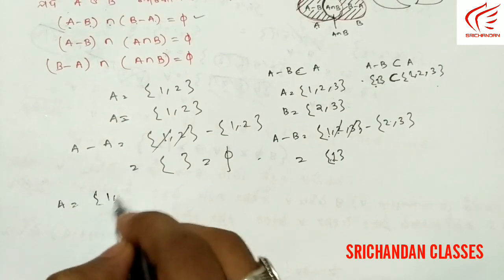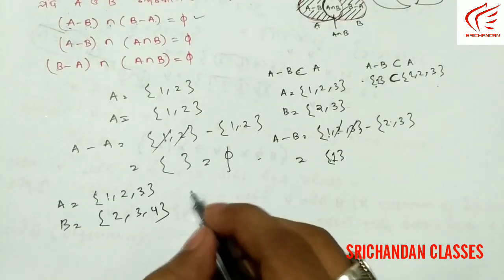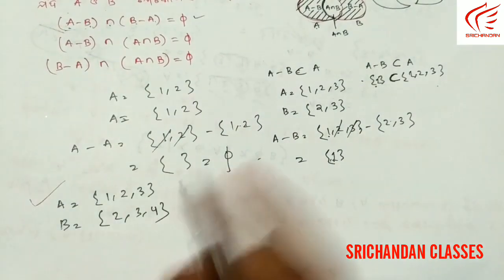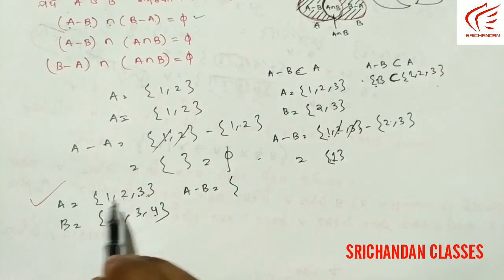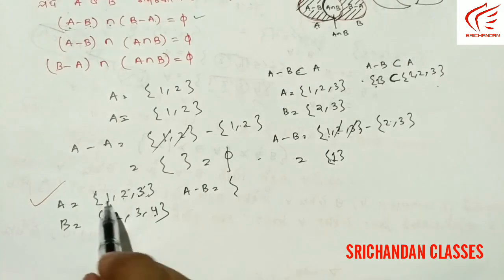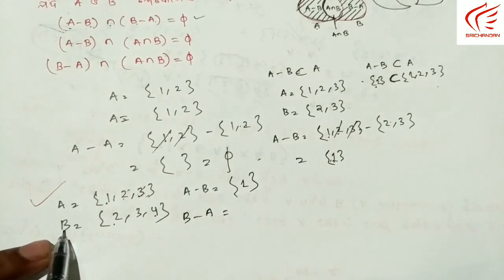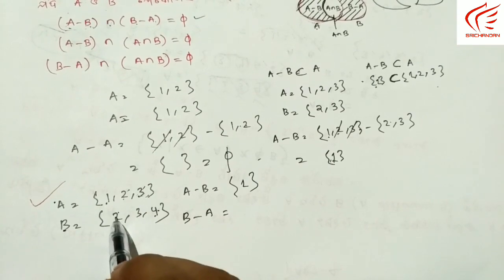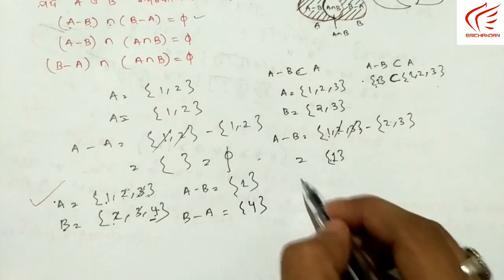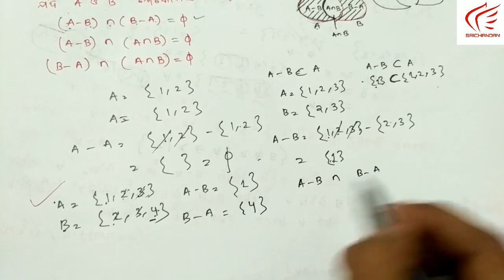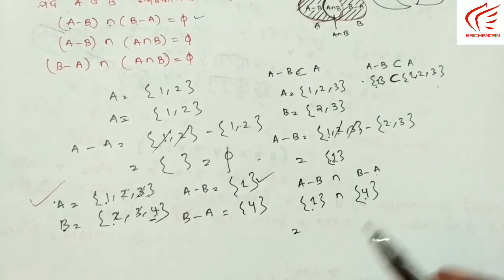A set is 1, 2, 3 and B set is 2, 3, 4. First of all, A-B: A set is 1, 2, 3 — cancel 2 and 3 since they appear in B — so A-B = {1}. B-A: B set is 2, 3, 4 — cancel 2 and 3 since they appear in A — so B-A = {4}. Now A-B intersection B-A: {1} intersection {4} = empty set.